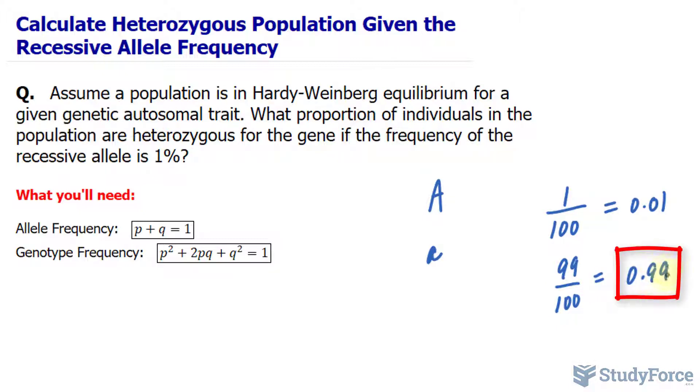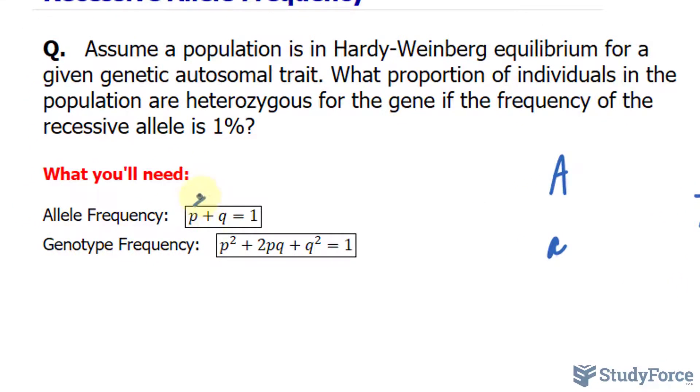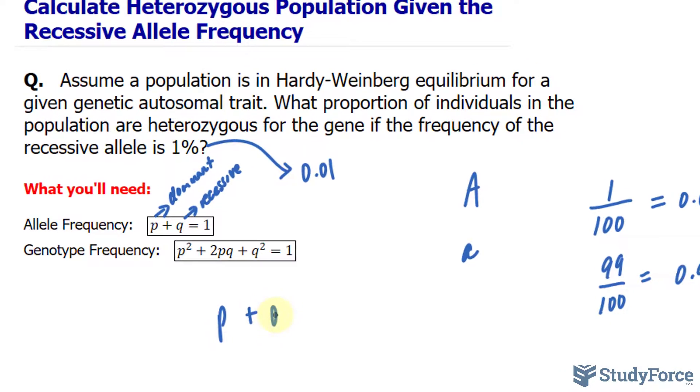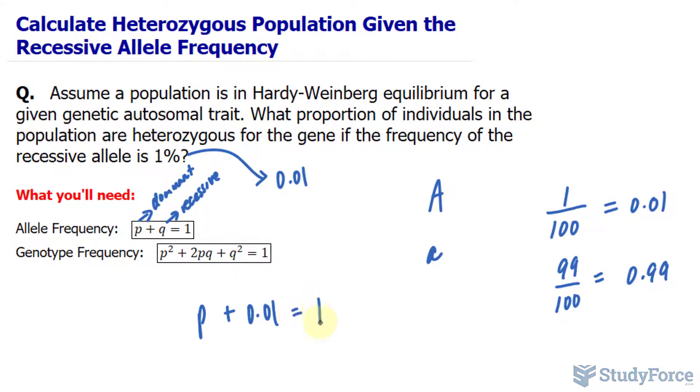You could have also calculated that by using the formula right here, where P, which we normally use to represent dominant alleles, plus Q, recessive, is equal to 1. And by substituting this as a decimal, 0.01, in for Q, and solving for P, you would get 0.99.